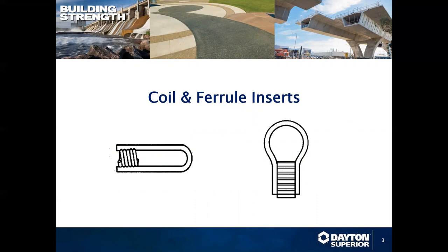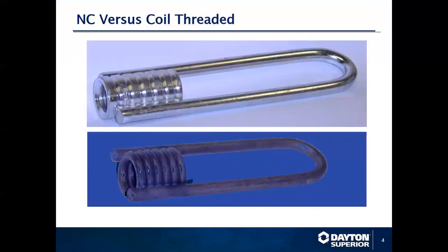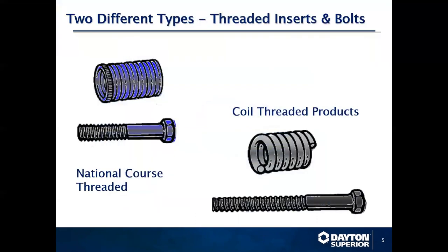Today we're going to talk about coil and ferrule inserts. The difference between them is a national coarse thread versus a standard coil thread. National coarse thread typically has a UNC pitch, typically one inch through eight on the pitch. Coil thread typically has two and a half threads per inch.